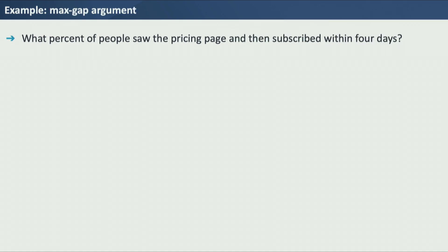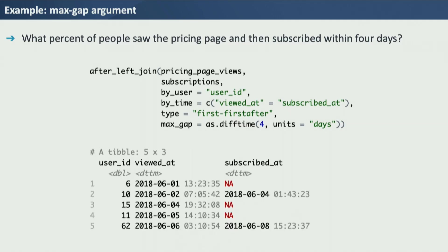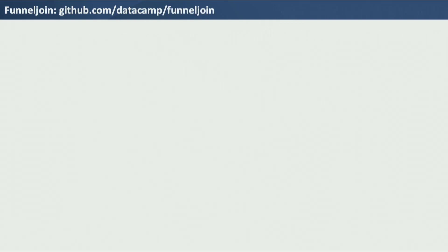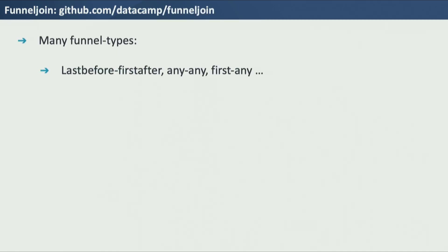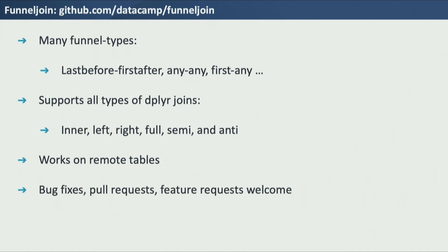If I want a tight funnel — say, it has to happen within four days — I can add a max_gap argument, giving it a difftime argument. Running the same code, we see more NAs on subscribed_at because even though those people subscribed, they didn't do it within four days. FunnelJoin supports many funnel types: last-before, first-after, any-any, first-any. It supports all types of dplyr joins. It works on remote tables because it uses dplyr and takes advantage of dbplyr. Bug fixes, pull requests, and feature requests are welcome — please try it yourself.